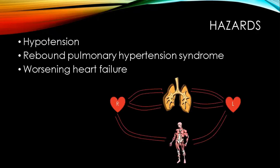Let's talk about hazards. The first one is hypotension — because nitric oxide is a pulmonary vasodilator, this can occur. Rebound pulmonary hypertension syndrome can also occur, so you don't want to make big drops in dose when weaning your patient from inhaled nitric oxide. Worsening heart failure can be a hazard because dilating the pulmonary system can increase the amount of blood returning to the left heart — similar to why you don't want to drop PEEP all at once in a patient with left heart failure.